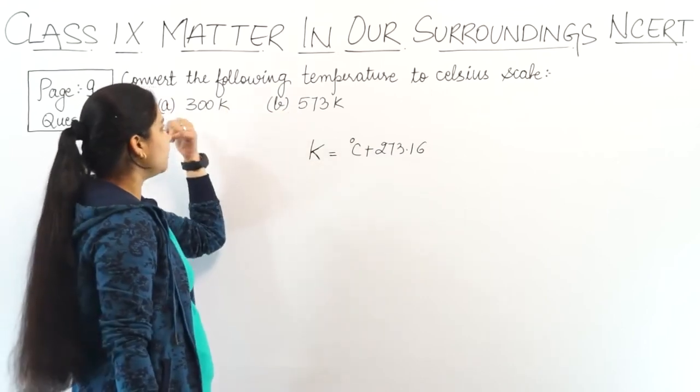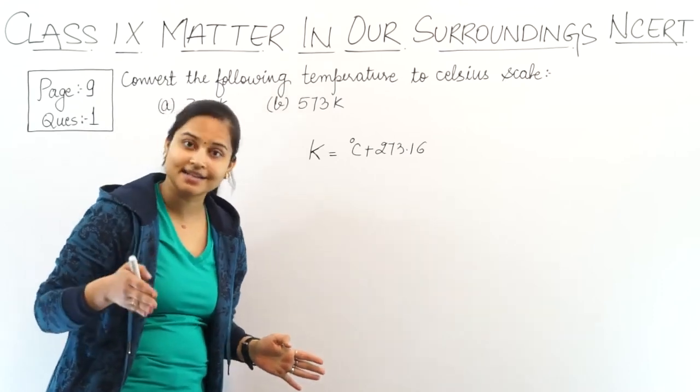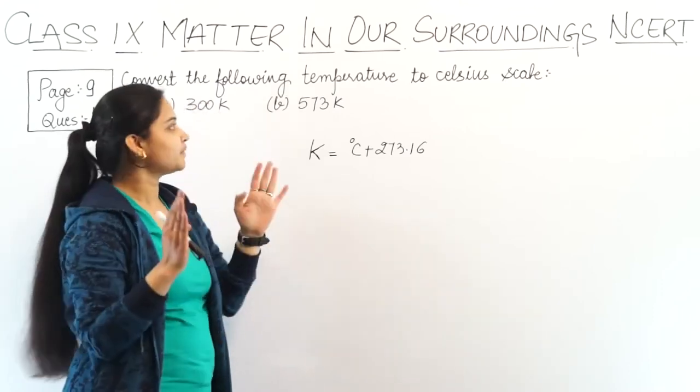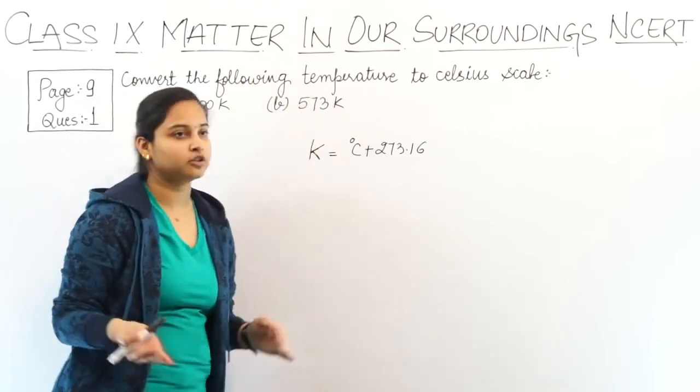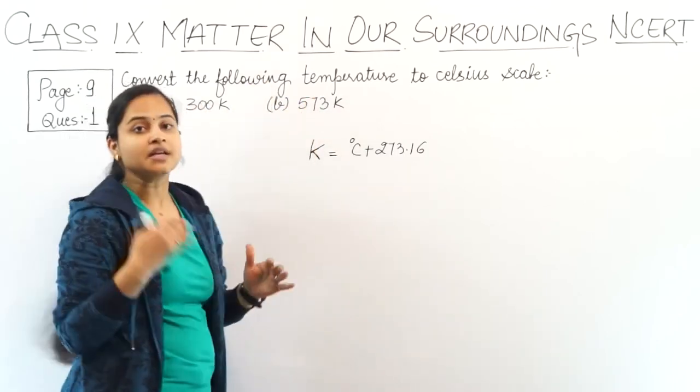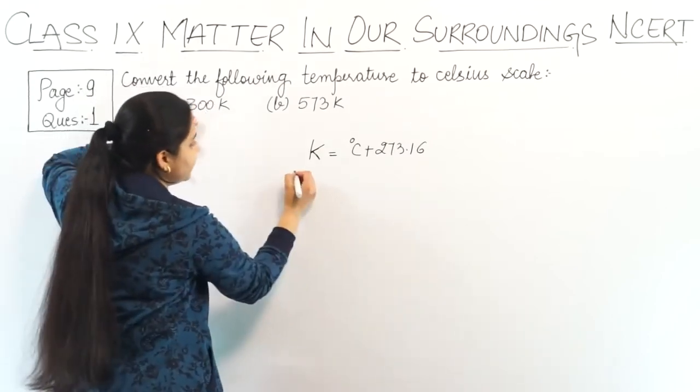Now, here we have 300 Kelvin. I have to change Kelvin to degree Celsius. So let's convert this temperature to Celsius scale. We have 300 Kelvin.